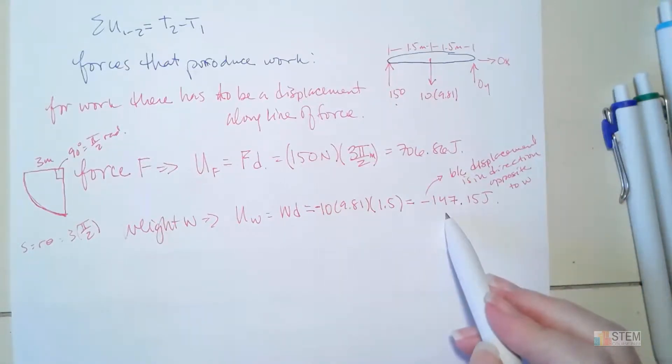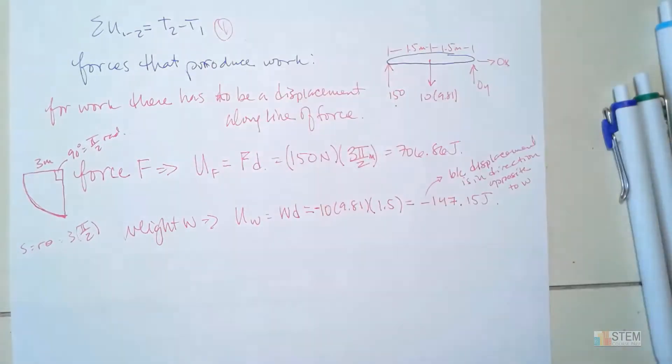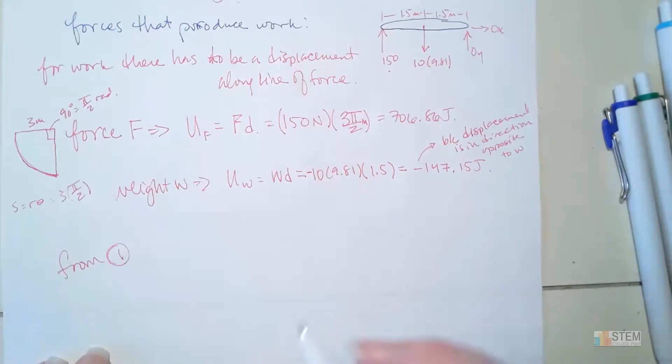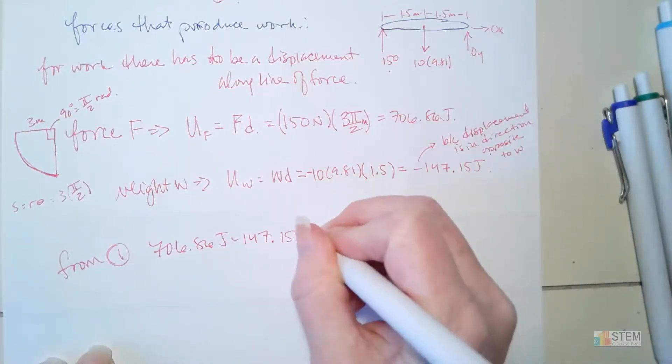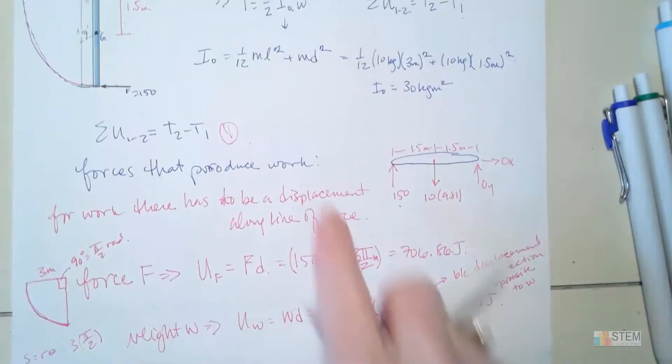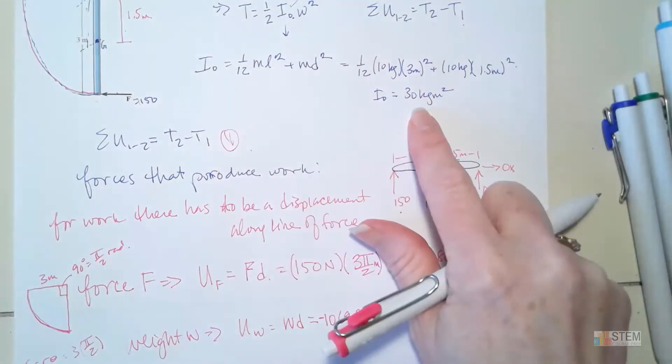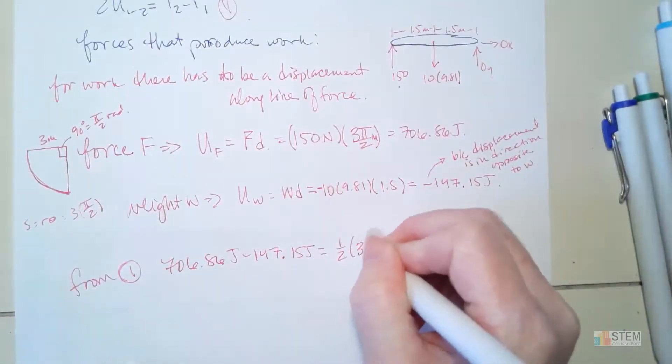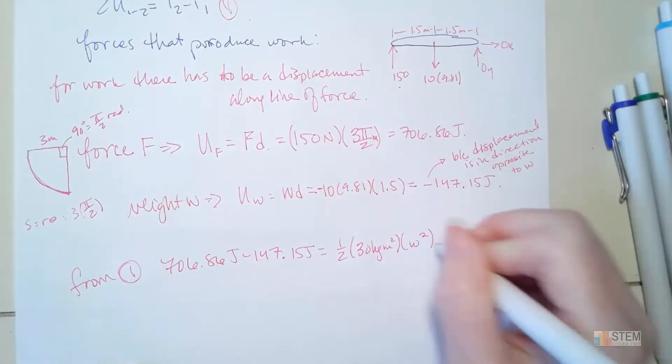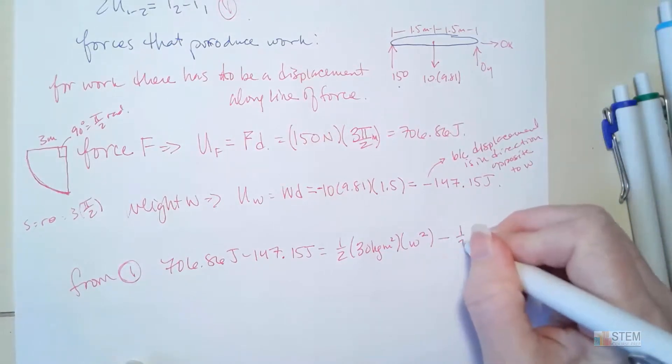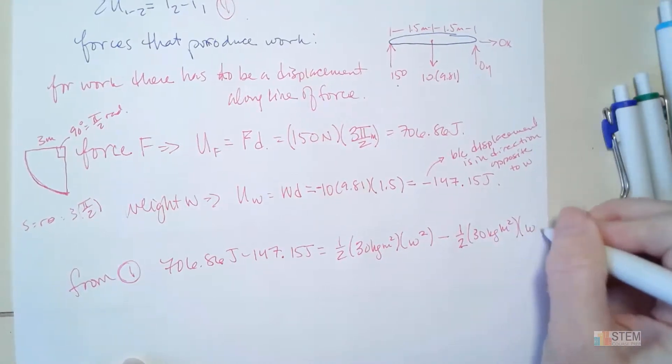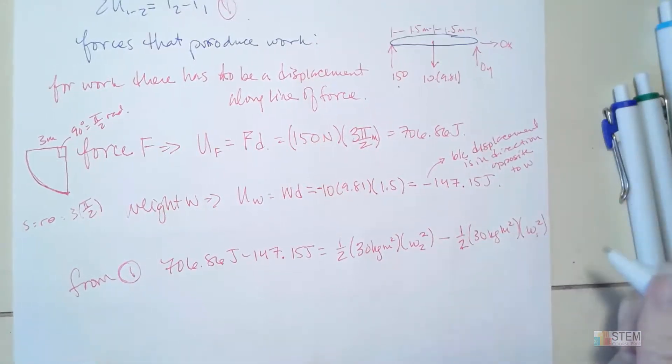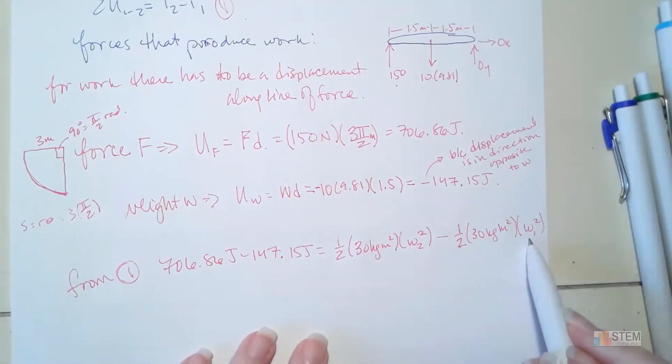And then now that we've got these two values, we're ready to go to this equation right here, equation one. So we're going to have 706.86 joules minus 147.15 joules, and that's going to equal T2. Well, our equation for T2 is one half I_O omega squared. We found I_O to be 30, so we're going to have 1/2 times 30 times omega_2 squared minus the initial T, so that'll be 1/2 times 30 times omega_1 squared. So omega_2 is what we're looking for, omega_1 was the initial omega. So what should omega_1 be?